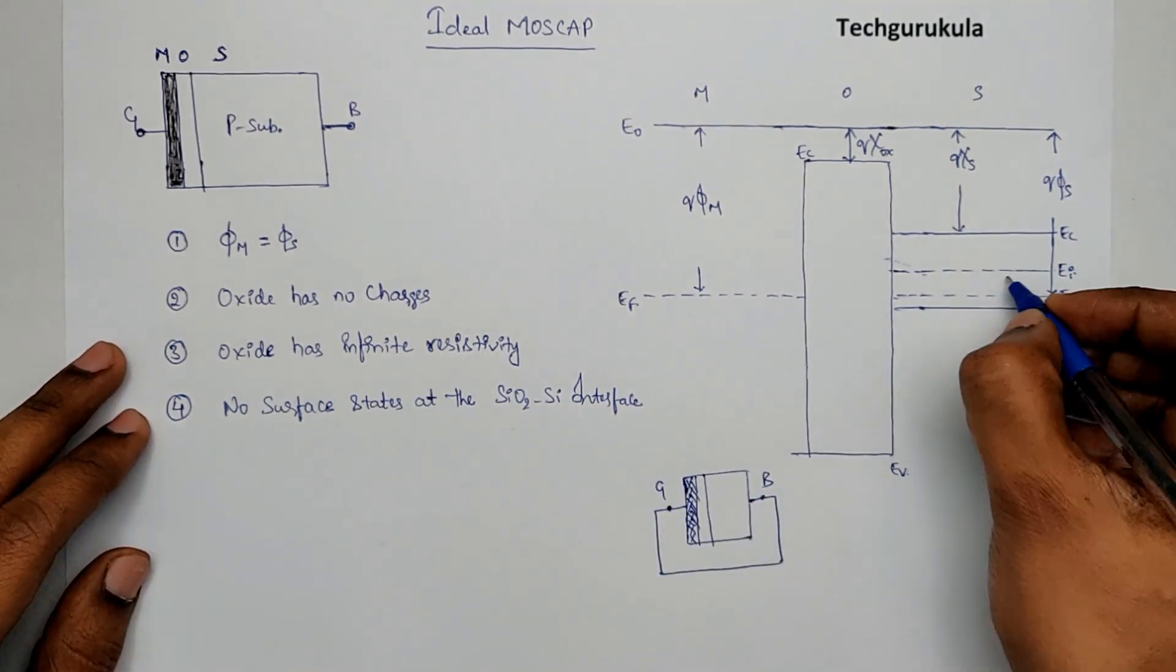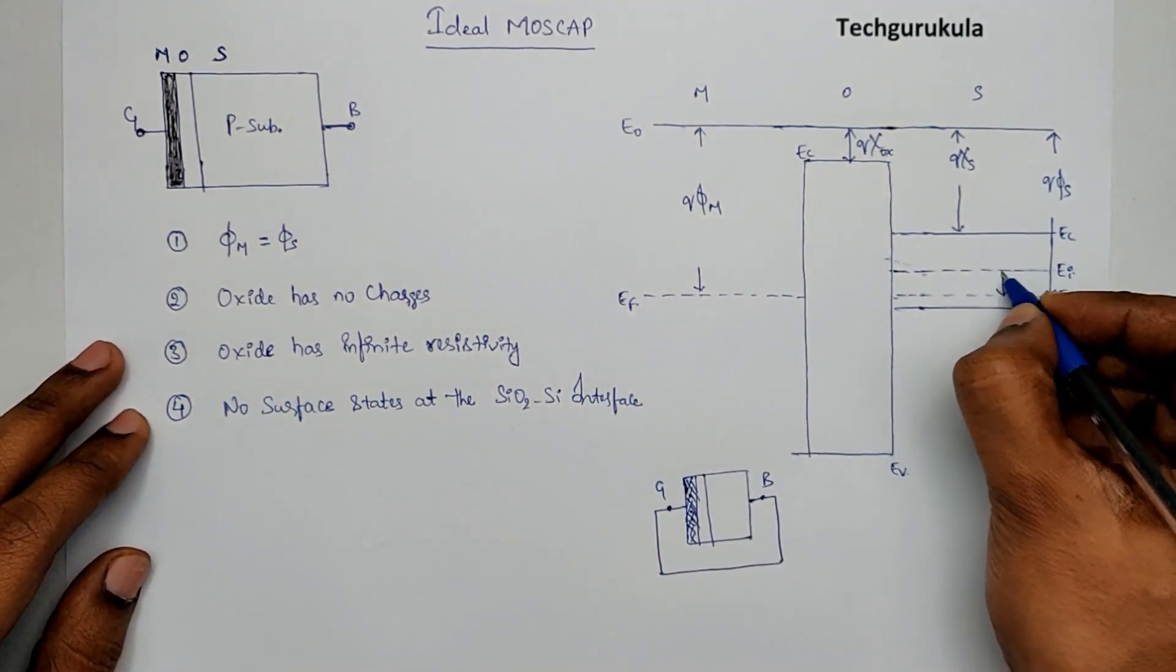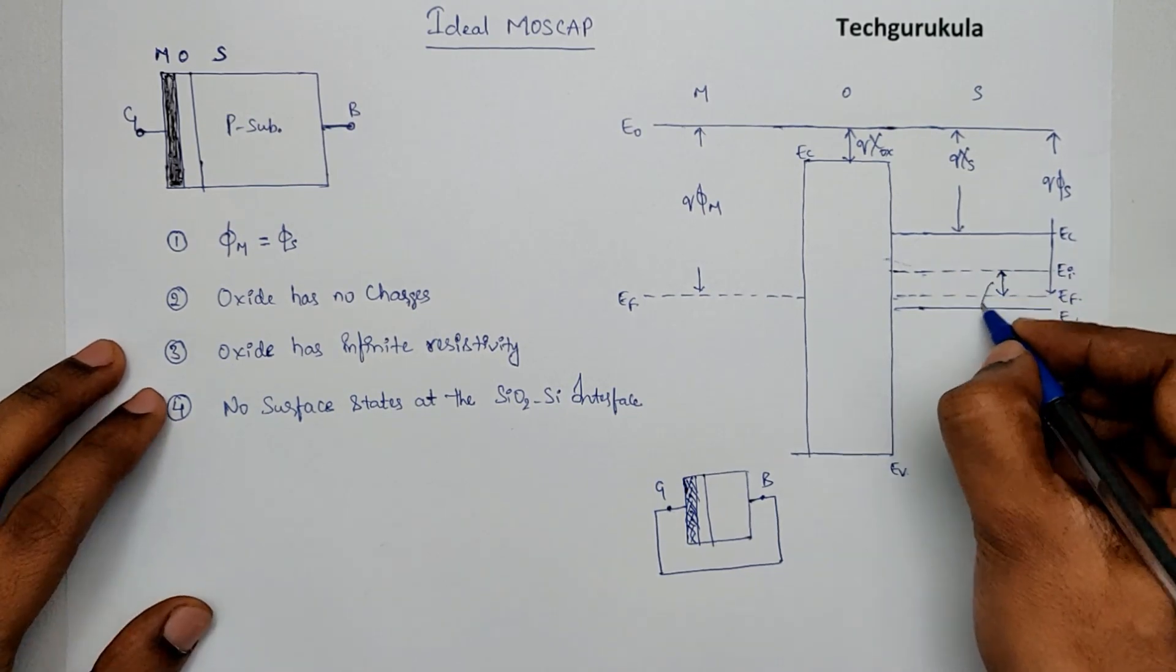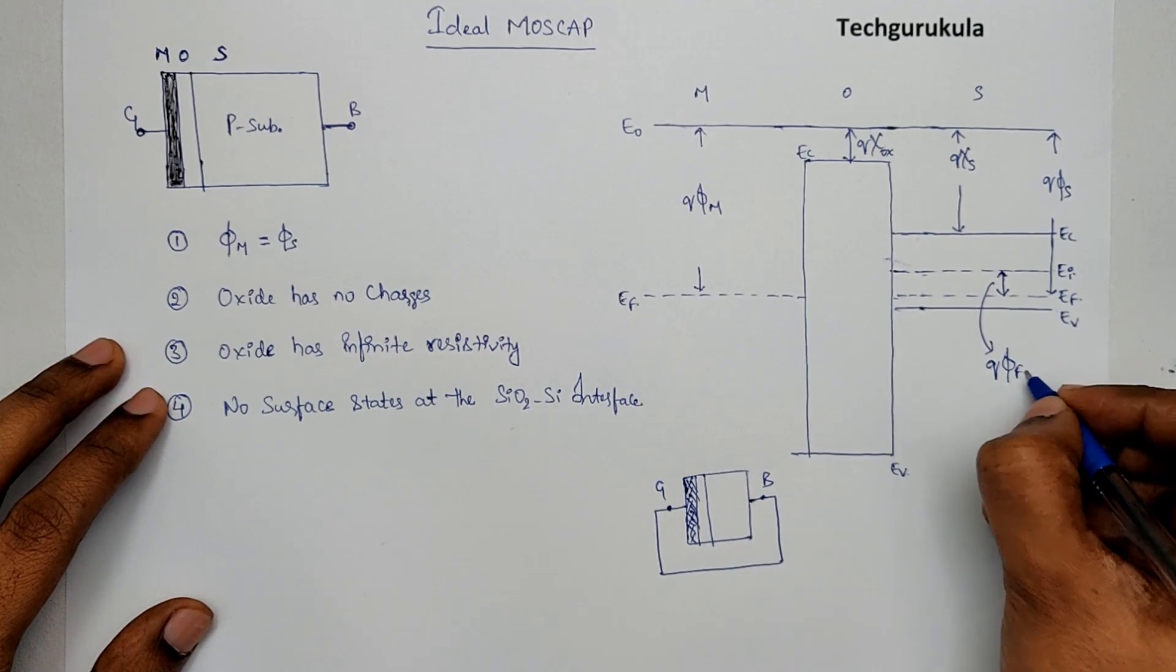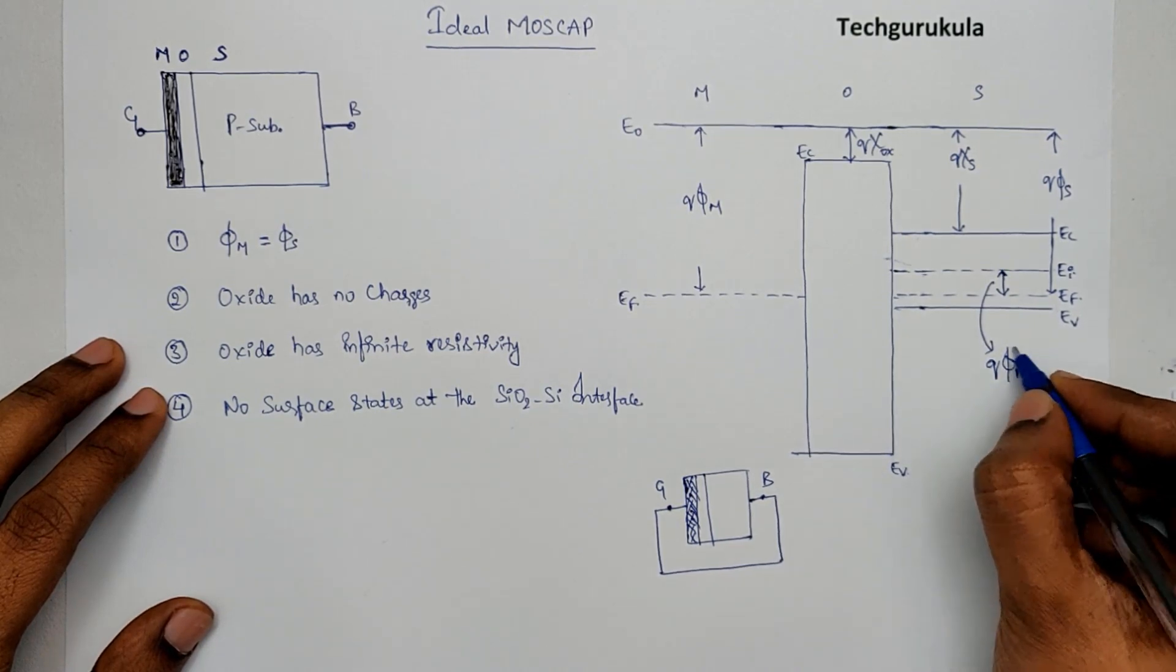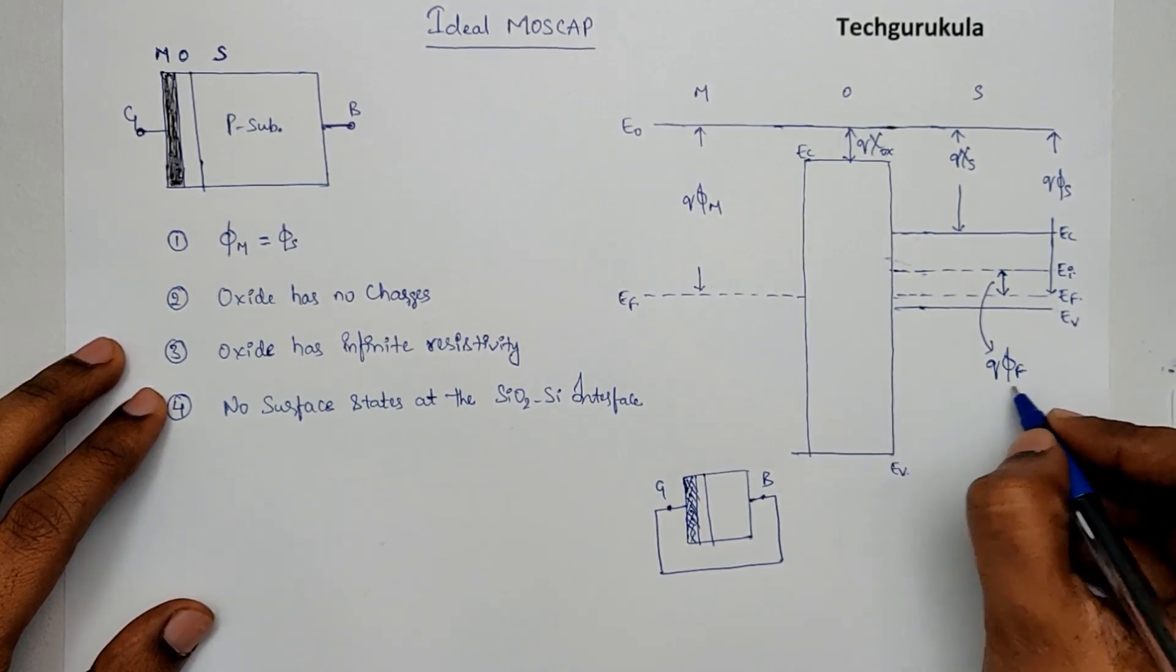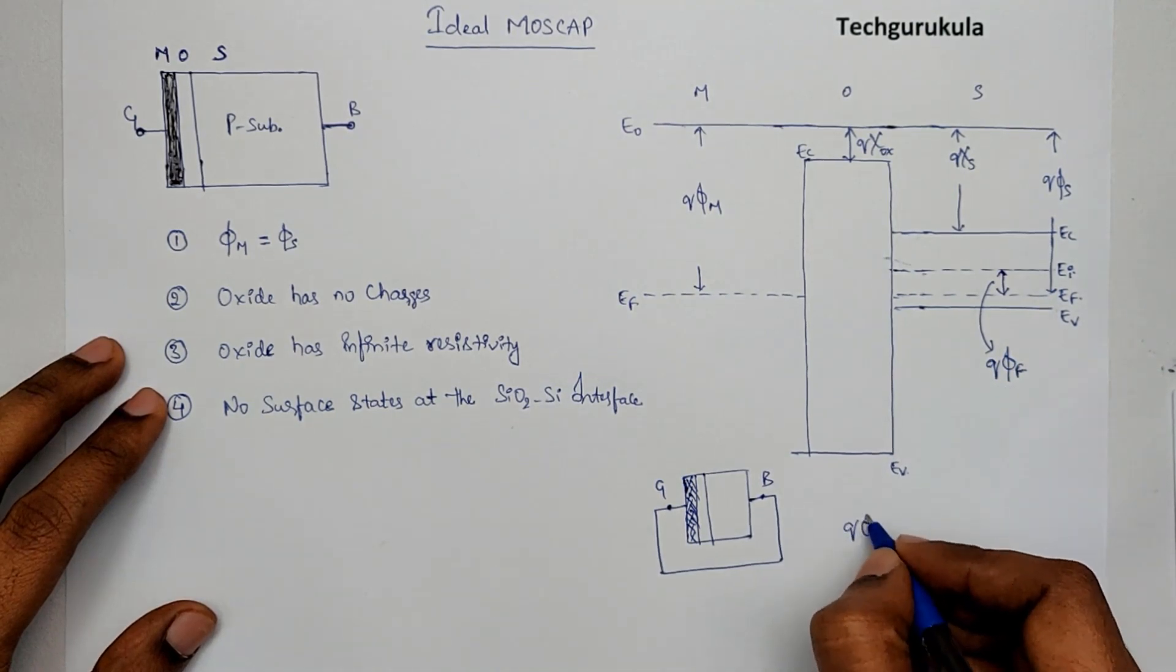And, one important point to note is this value, which is taken as Q times phi F. This is called a Fermi potential. Phi F is called Fermi potential.